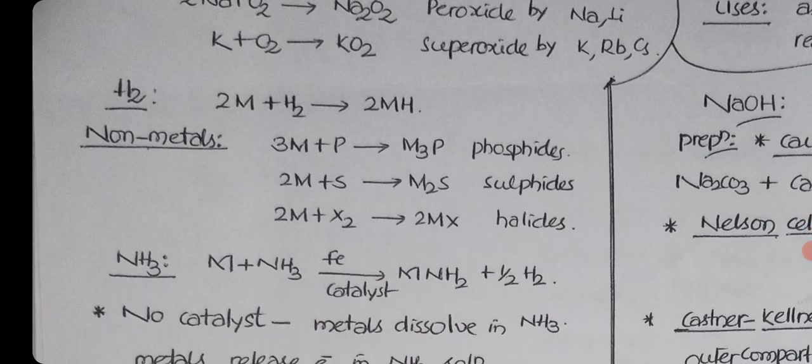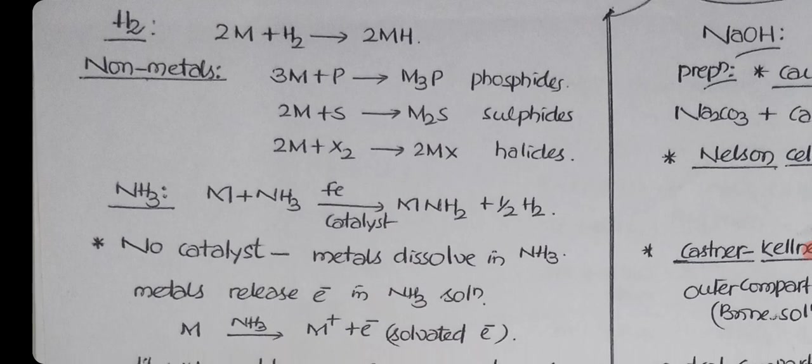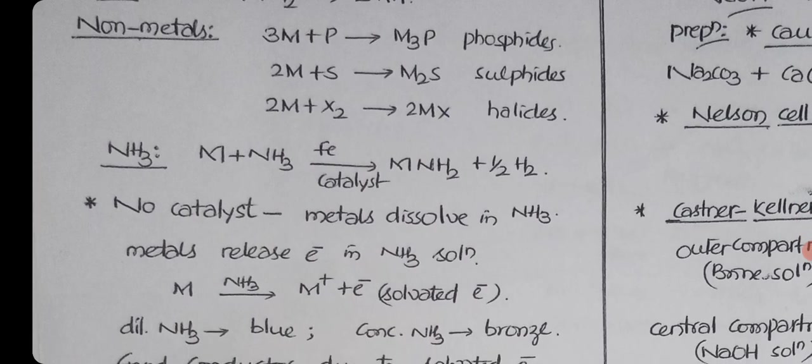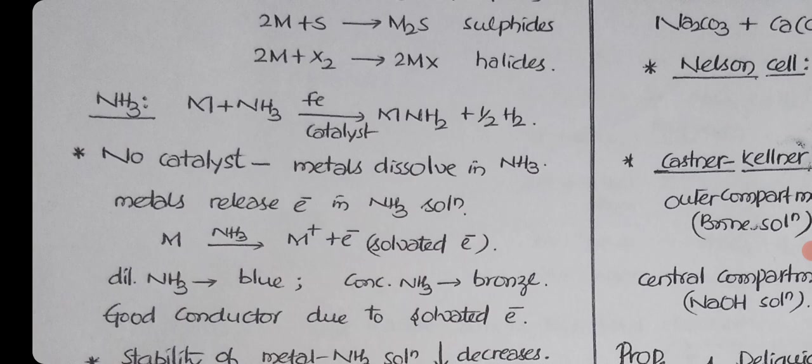With hydrogen, they form hydrides. Lithium hydrides, sodium hydrides, all these are good reducing agents. With non-metals like phosphorus, phosphides; sulfur, sulfides; halogens, halides are formed. With ammonia, it is very special. When metals react with ammonia, they form metal amide, sodamide type, and release hydrogen gas. No catalyst is required.